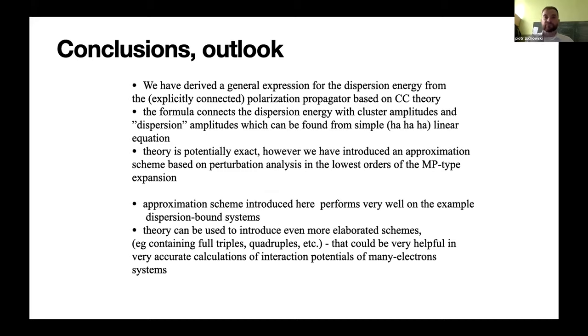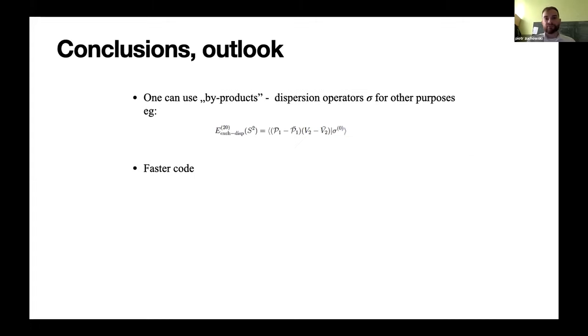So, we have derived a general equation for dispersion in terms of coupled cluster time-independent polarization propagator. This formula is quite simple, I would say. It needs only cluster amplitudes and it only needs the solution of some simple linear equation. The theory is potentially exact, but, of course, we need to have some approximated scheme how to calculate it routinely. But this approximation scheme can be essentially improved.